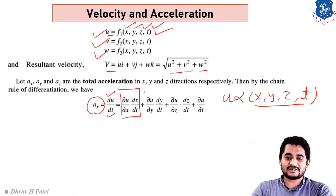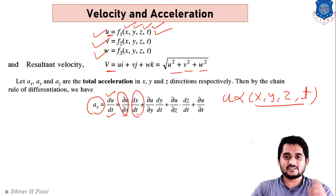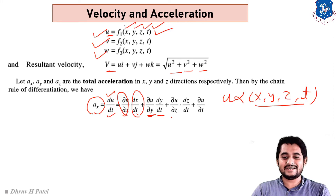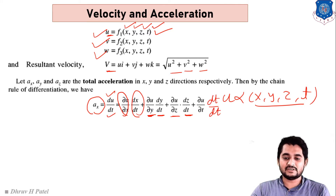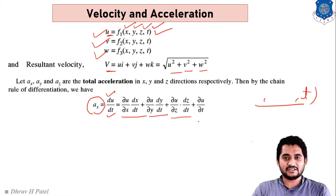Let us focus on the partial differentiation terms. We have ∂u/∂x · dx/dt, similarly in the y-direction ∂u/∂y · dy/dt, for the z-direction ∂u/∂z · dz/dt, and for time ∂u/∂t · dt/dt, where dt/dt cancels to give one. So the final equation for acceleration in the x-direction is: (∂u/∂x)(dx/dt) + (∂u/∂y)(dy/dt) + (∂u/∂z)(dz/dt) + ∂u/∂t.